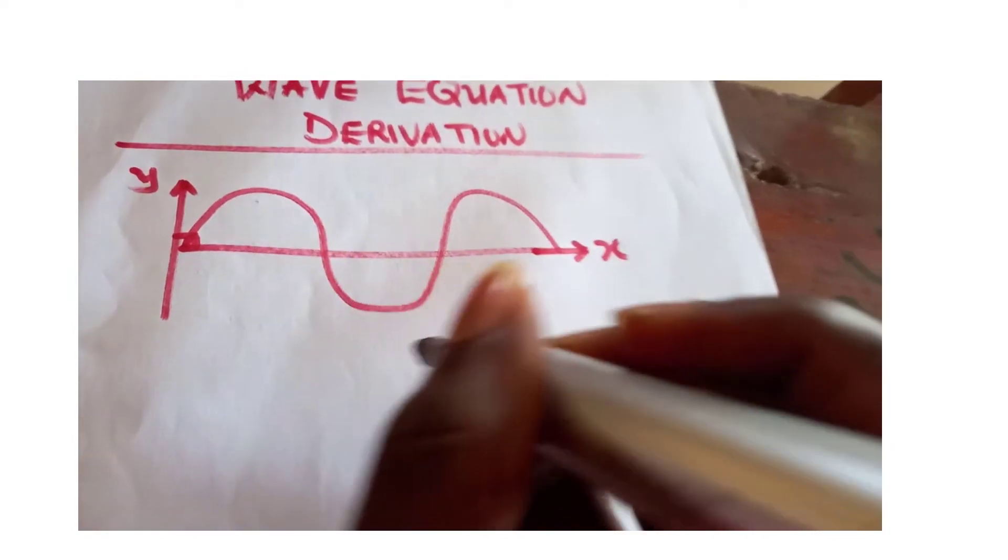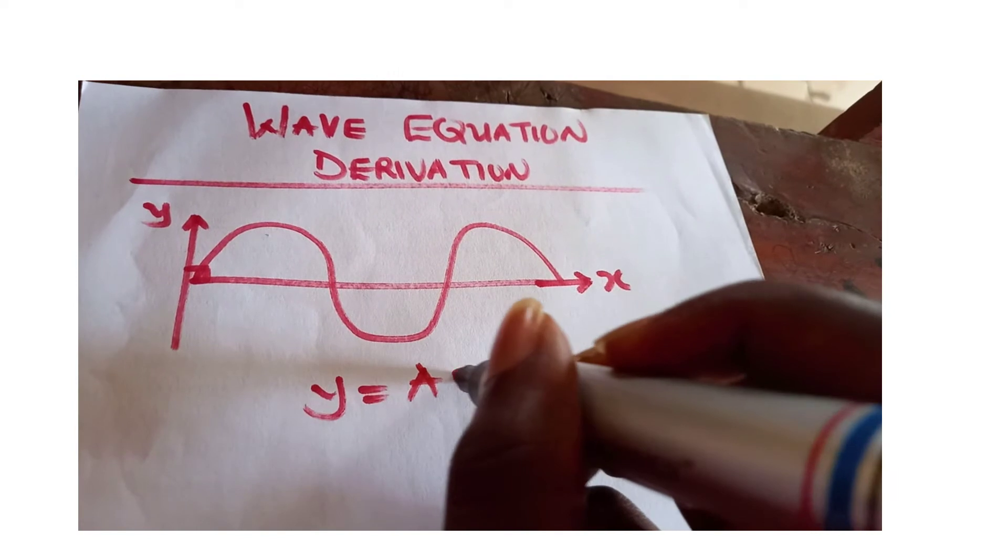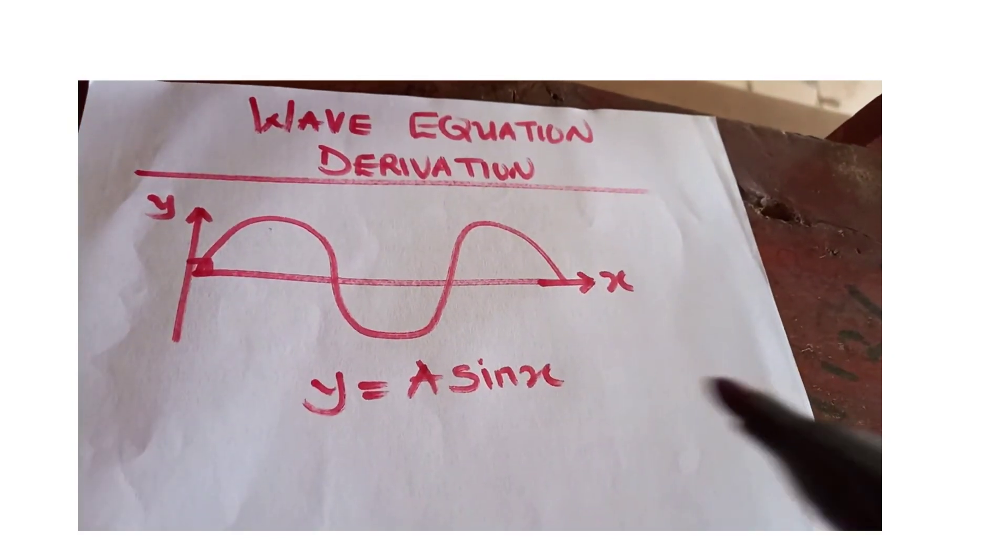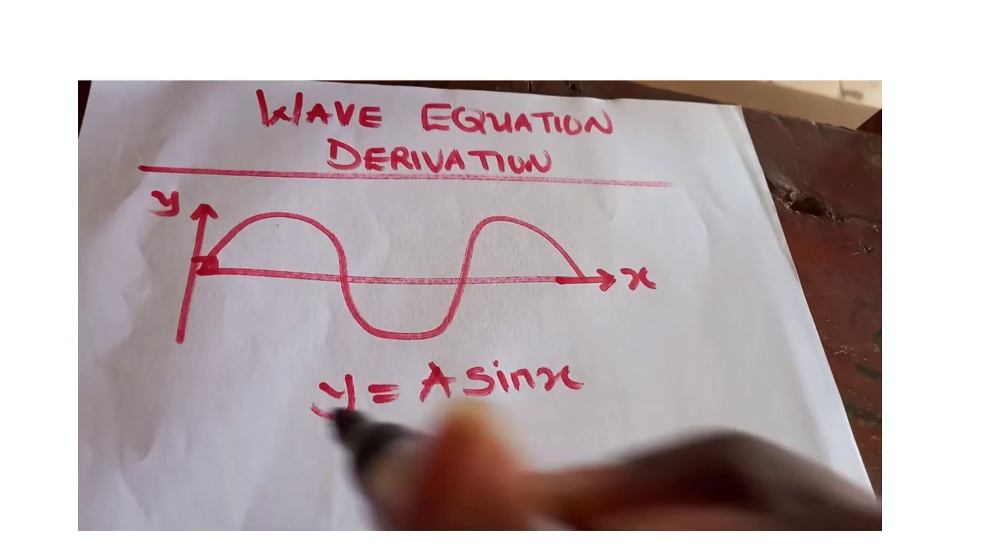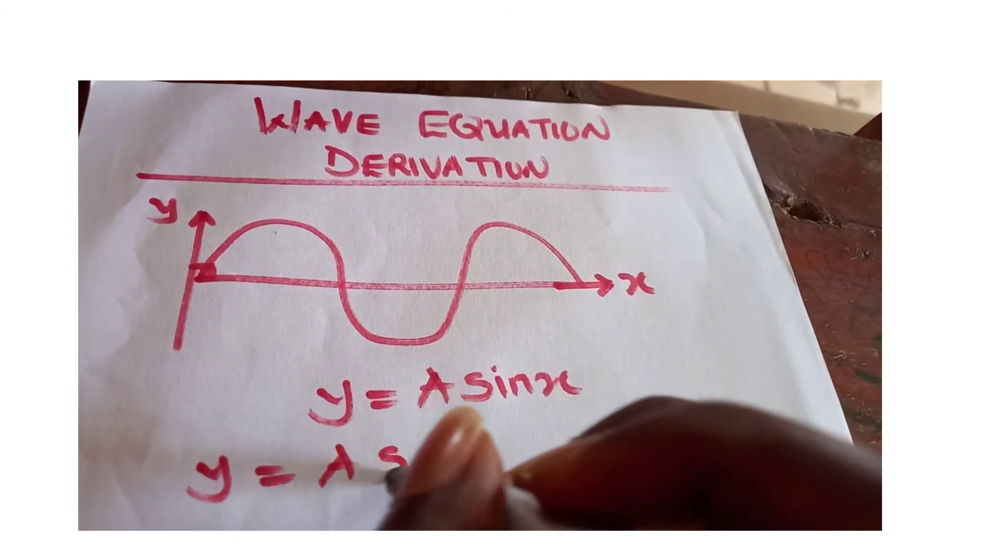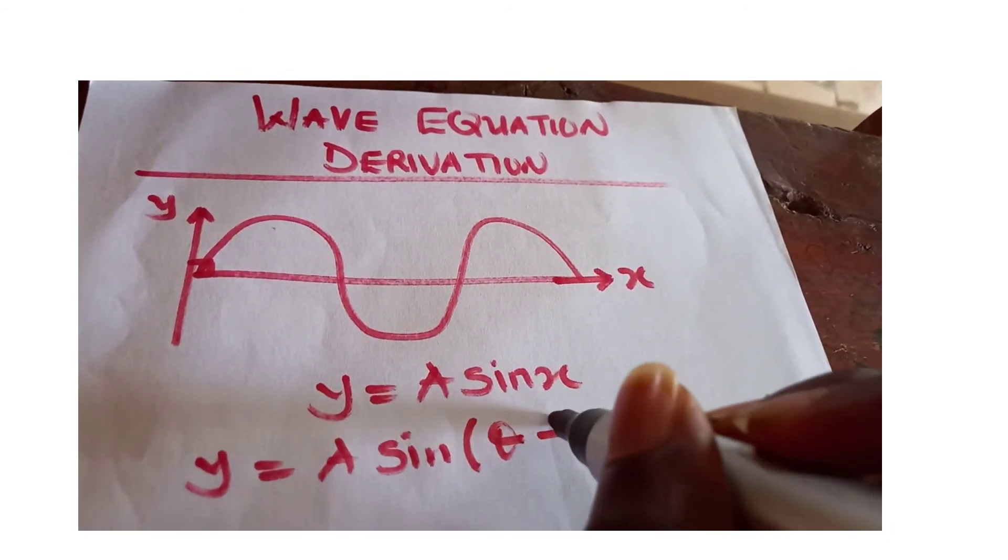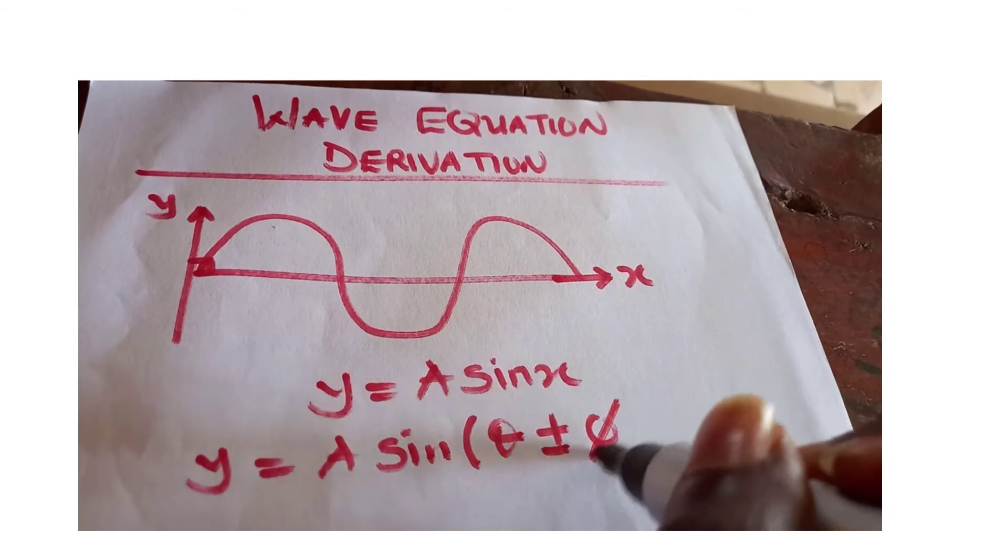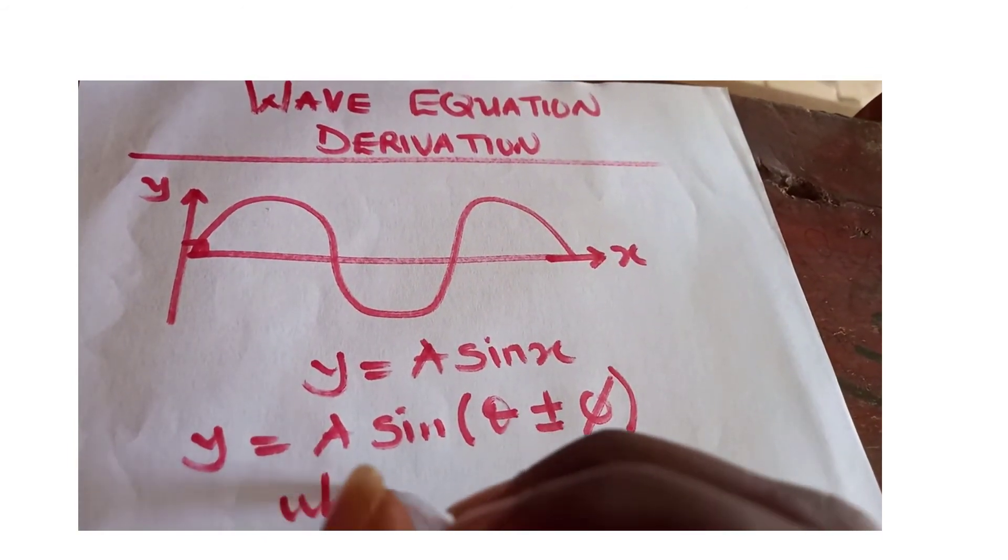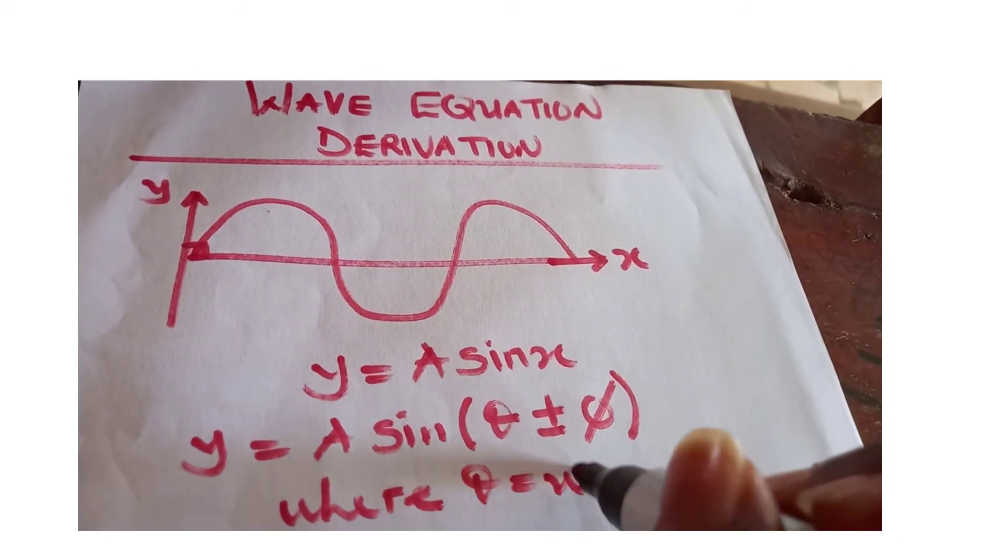So we have y equal to A sine x. These are wave signs. So from here we can see that y is equal to A sine theta plus or minus phi, where theta is equal to omega t and phi.